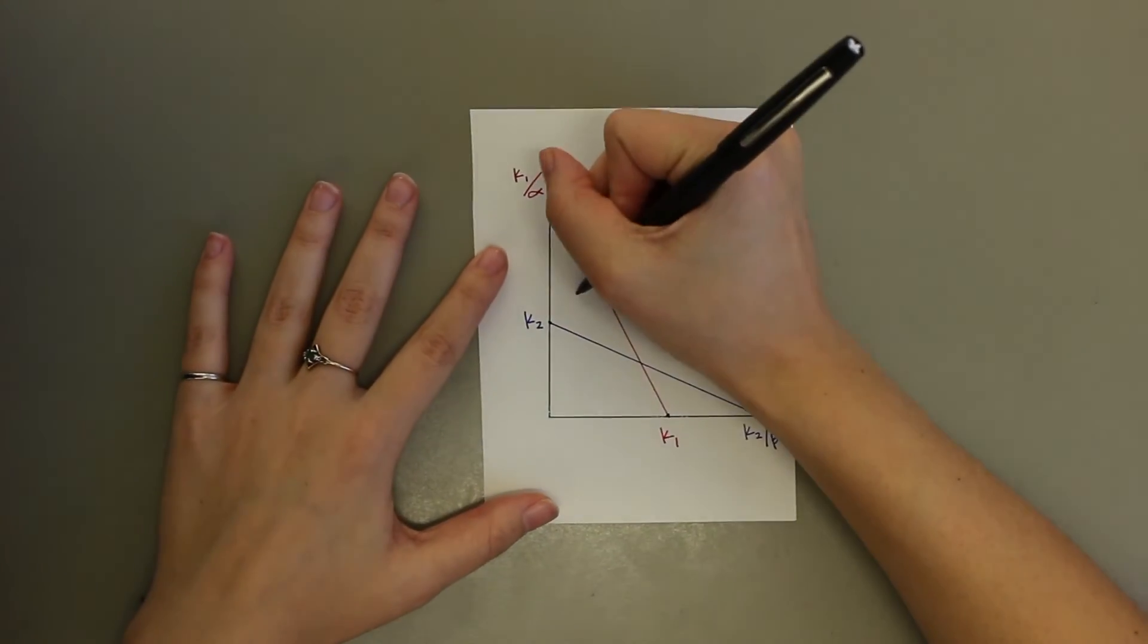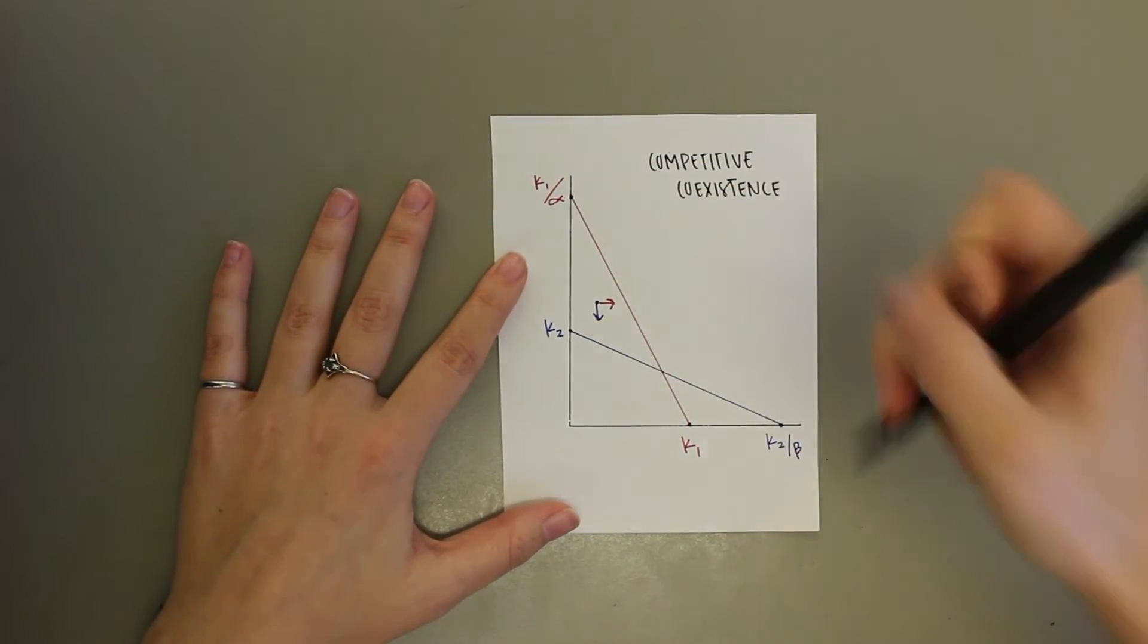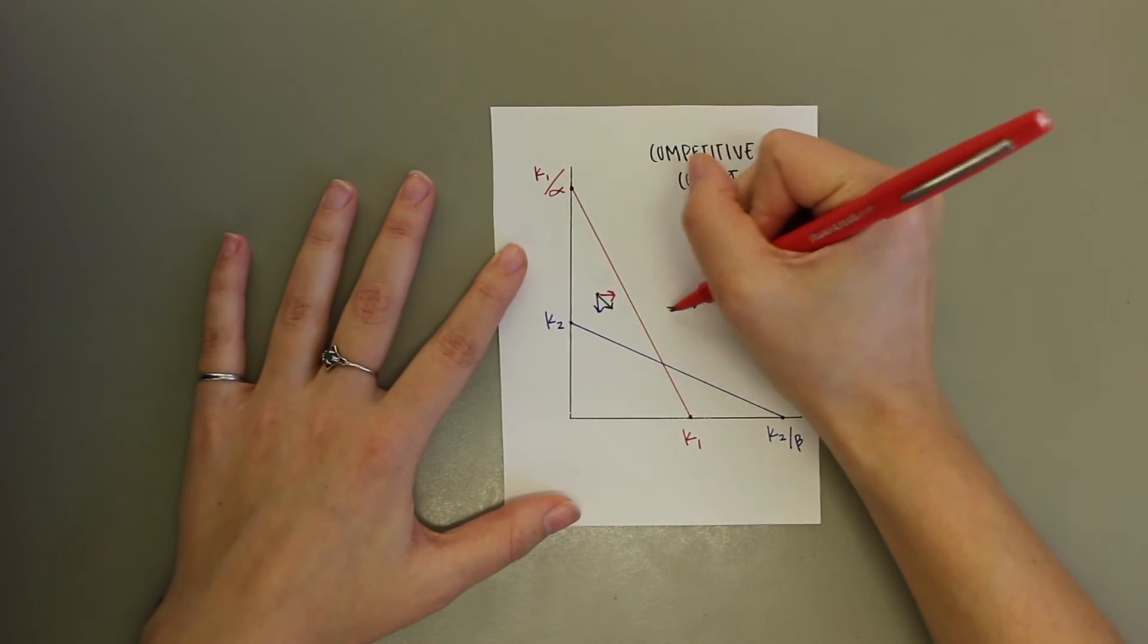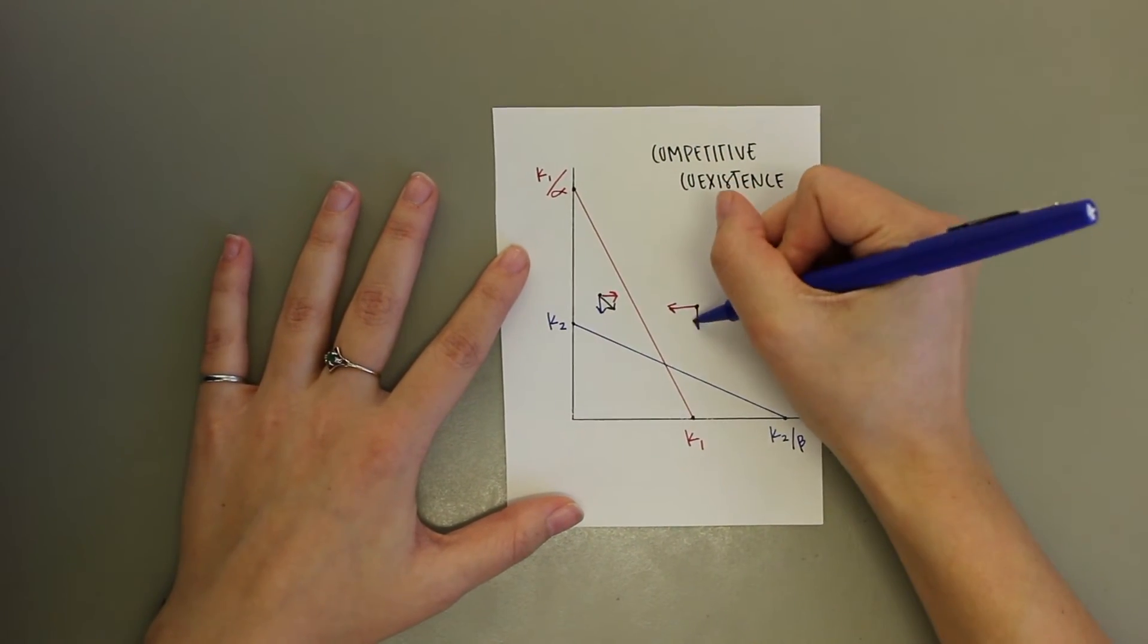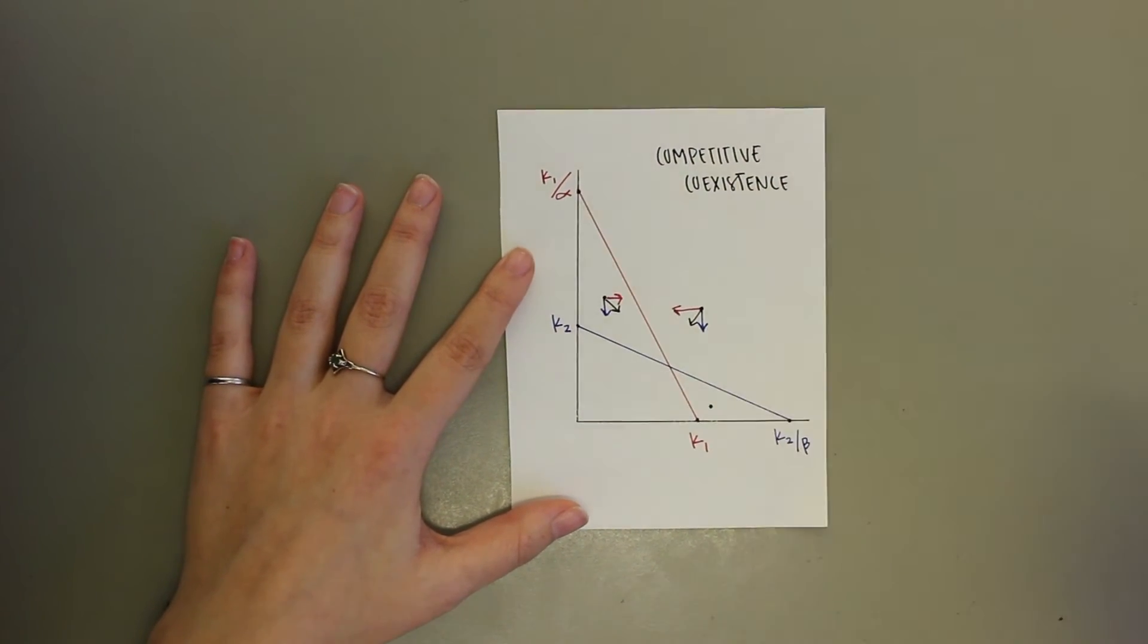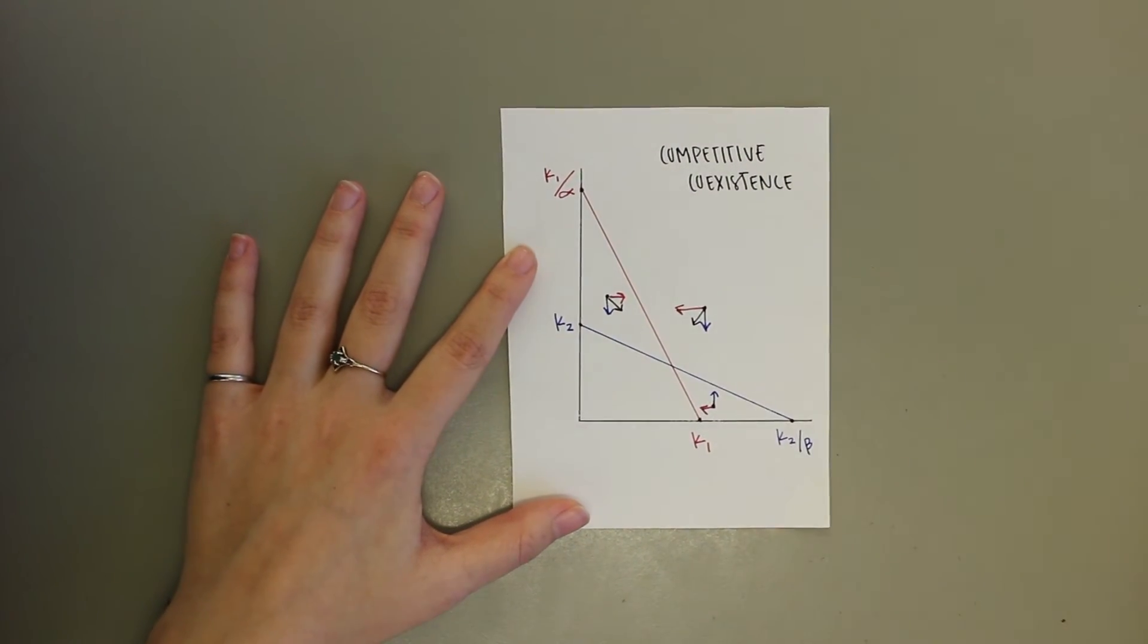The next outcome that comes from the Lotka-Volterra model represents coexistence between the two species. When looking at the model, coexistence occurs when the K1 over alpha and K2 over beta both lie on the outside of K1 and K2. Whenever the arrows are drawn towards the carrying capacities, no matter which way you try it, they will always point to the center where the two lines intersect.